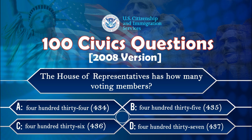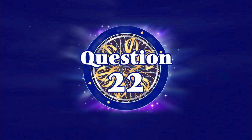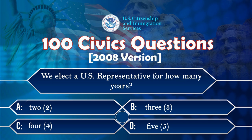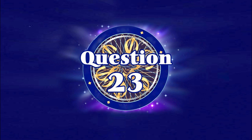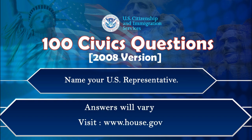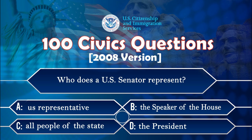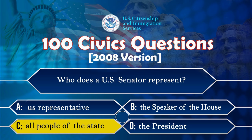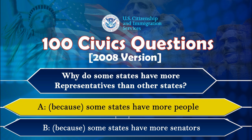The House of Representatives has how many voting members? Four hundred and thirty-five. We elect a U.S. Representative for how many years? Two. Who does a U.S. Senator represent? All people of the state. Why do some states have more representatives than other states? Because some states have more people.